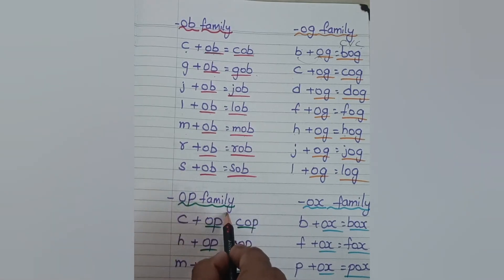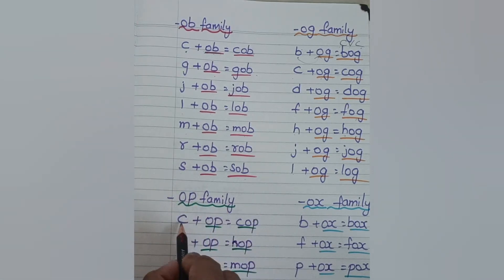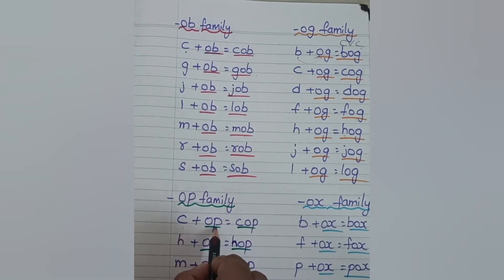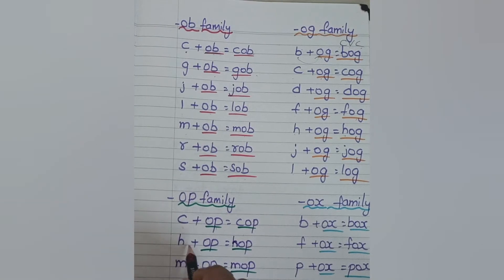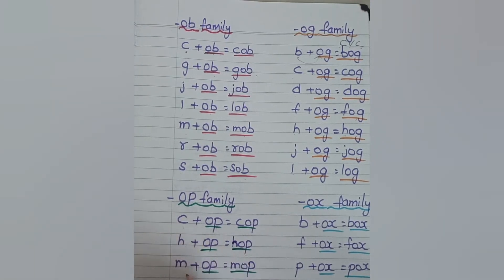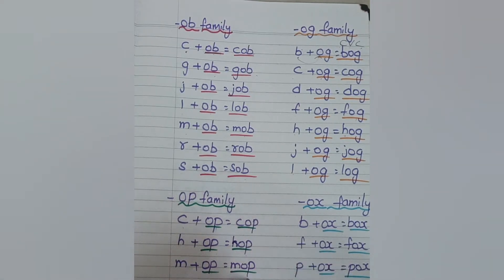Next family is OB family. K, OB — cob. H, OB — hob. M, OB — mob. P, OB — pop.